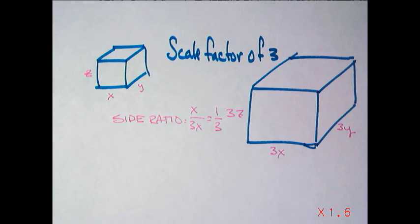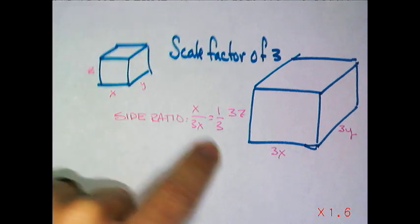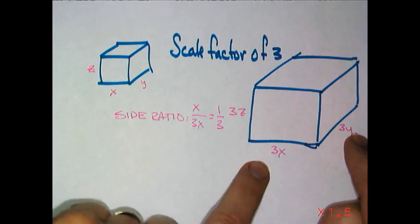And from the last video, if we were doing area ratio, the conjecture said that that would be the 1 to 3 squared, then the area ratio should be 1 to 9, and that would be true because that's x times y, and this would be 3x times 3y, it would be 9xy.